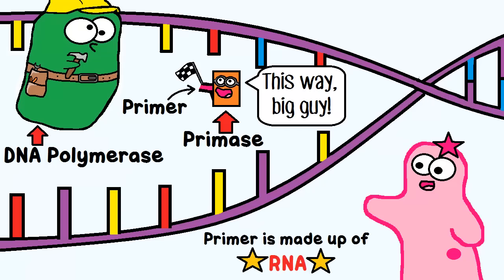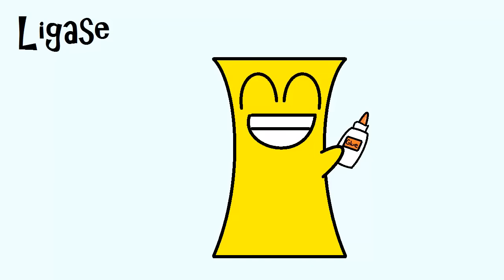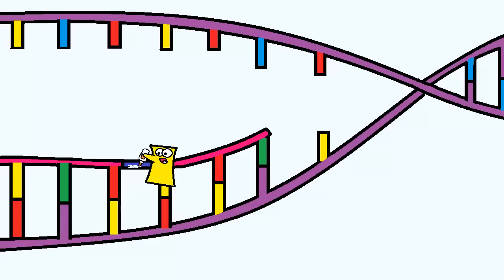What's kind of interesting about the primer that primase makes? It's actually a piece of RNA. Next, ligase — the gluer. It helps glue DNA fragments together. More about why you would need that a little later.